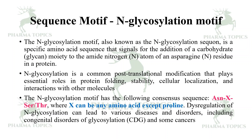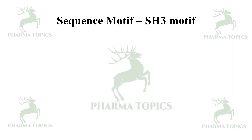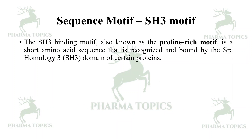The N-glycosylation motif has the consensus sequence: asparagine, followed by X (any amino acid), followed by serine or threonine. Dysregulation of N-glycosylation can lead to a variety of disorders such as congenital disorders of glycosylation and some cancers.